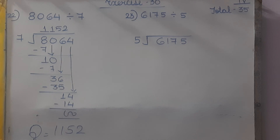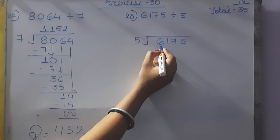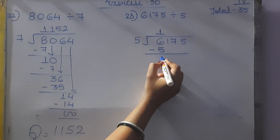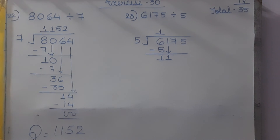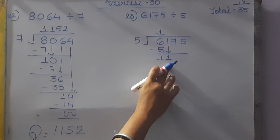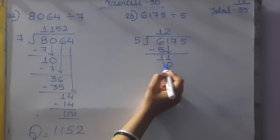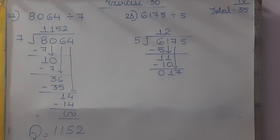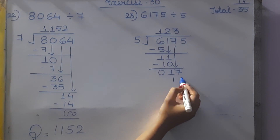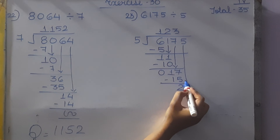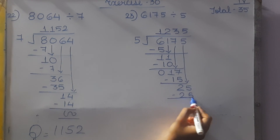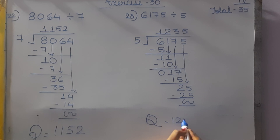Question 23: 6175 divided by 5. First number is 6. In the table of 5, 5 ones are 5, 5 twos are 10 — bigger than 6. So take 5 ones are 5. 6 minus 5 is 1. Bring down 1. 5 twos are 10 — less than 11. So 11 minus 10 is 1. Bring down 7. 5 threes are 15, so 17 minus 15 is 2. Bring down 5. 5 fives are 25, so remainder is 0. The quotient is 1235.